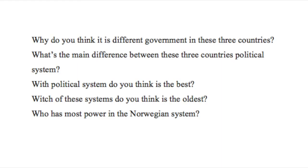One of the main differences is how much the citizens contribute in the decision making. The three countries differ in a way where, for example, in the UK the prime minister decides a lot more than in, for example, Norway, where the power is divided. Why do you think there is a different government in these three countries? What is the main difference between these three countries' political systems? Which political system do you think is the best? Which of these systems do you think is the oldest? Who has the most power in the Norwegian system?